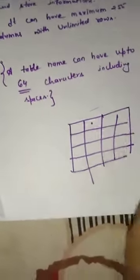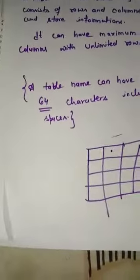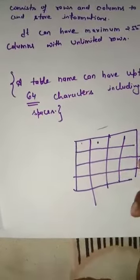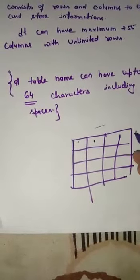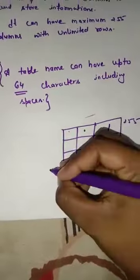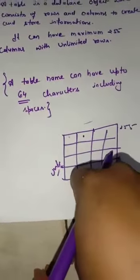A table can have a maximum of 255 columns. These are columns: one, two, three, four. So the maximum number of columns is 255, and rows are unlimited, meaning there is no limitation on rows.